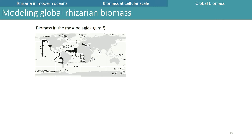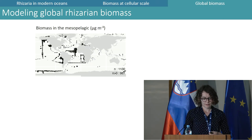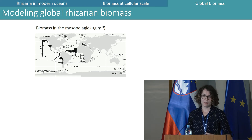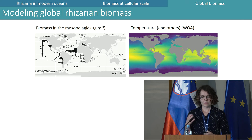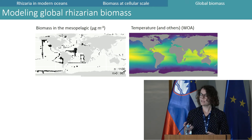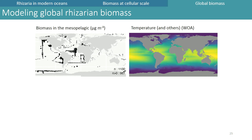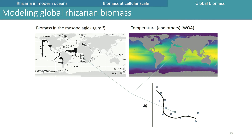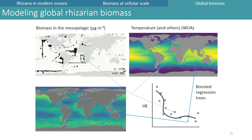To model the global biomass, each profile is associated with global grid environmental variables such as temperature, and then a boosted regression tree is built to model the relationship between biomass and environmental variables. This boosted regression tree is then used with the environmental variables to give predicted biomass for all points of the grid.